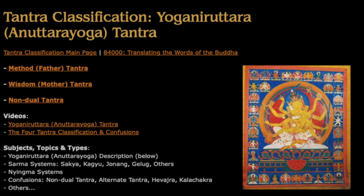The third category is called Yoga Tantra, and the fourth is called Highest Yoga Tantra. Within Highest Yoga Tantra, we have two or three subclassifications: method, wisdom, and non-dual. The wisdom category is sometimes called Mother Tantra, or also Yogini Tantra. So within the Tantra classification system, we have Yoga Tantra, Yogini Tantra, and Highest Yoga Tantra — many uses of the term yoga.